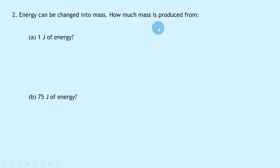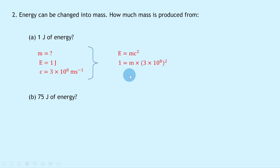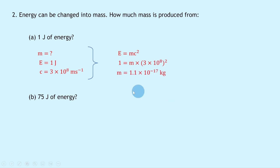Question 2 says: energy can be changed into mass — how much mass is produced from one joule of energy? This time we're trying to find the mass m, the energy E is 1 joule, and the speed of light c is 3×10⁸ m/s. Using E = mc², substituting gives 1 = m × (3×10⁸)². Dividing gives an answer of 1.1×10⁻¹⁷ kilograms.